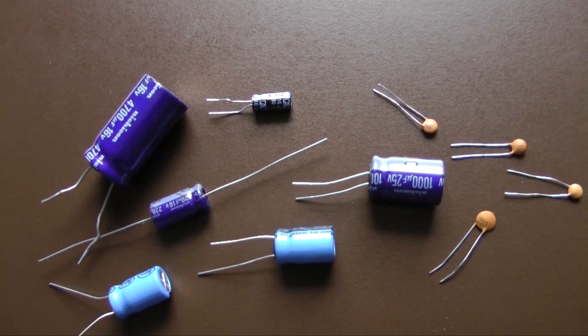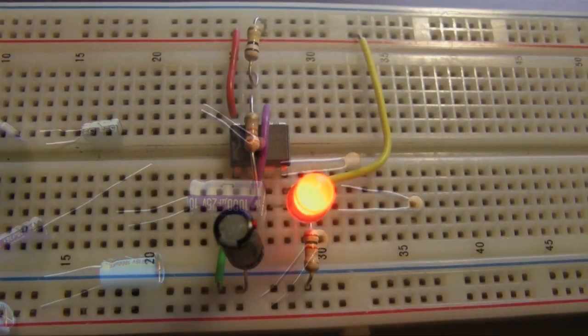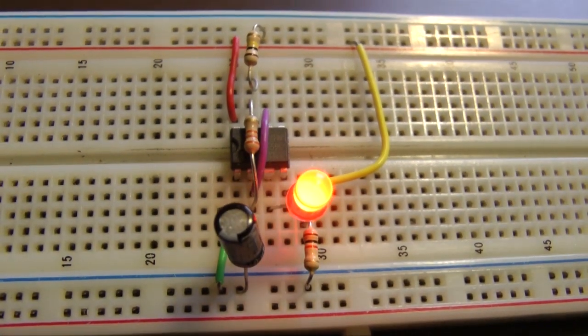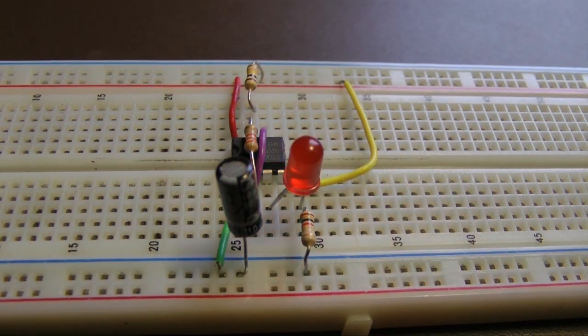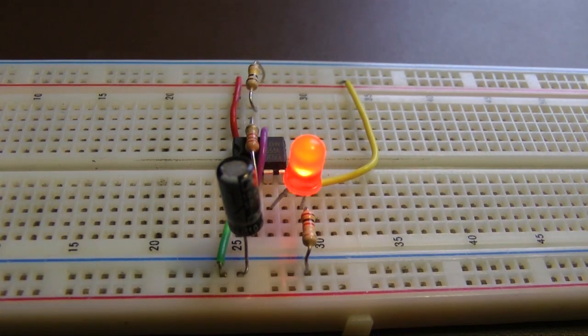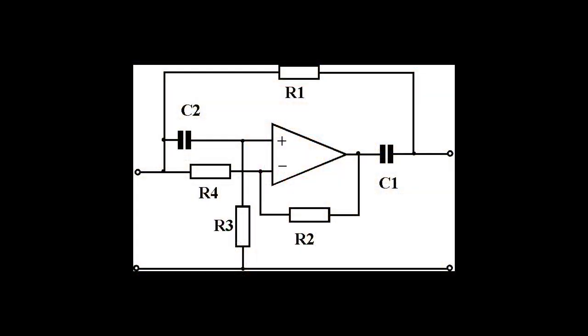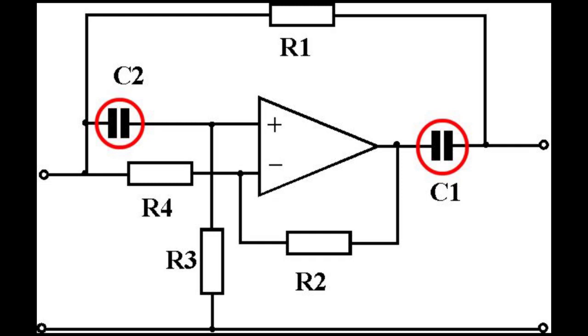Capacitors perform a variety of functions in electronic circuits. Capacitors, combined with resistors, control the frequency of the flashing LED on this 555 circuit. They are also used to reduce ripple in DC power supplies, and they are key components in frequency filters, such as circuits used to reduce the 60-cycle hum that often affects audio amplifiers.